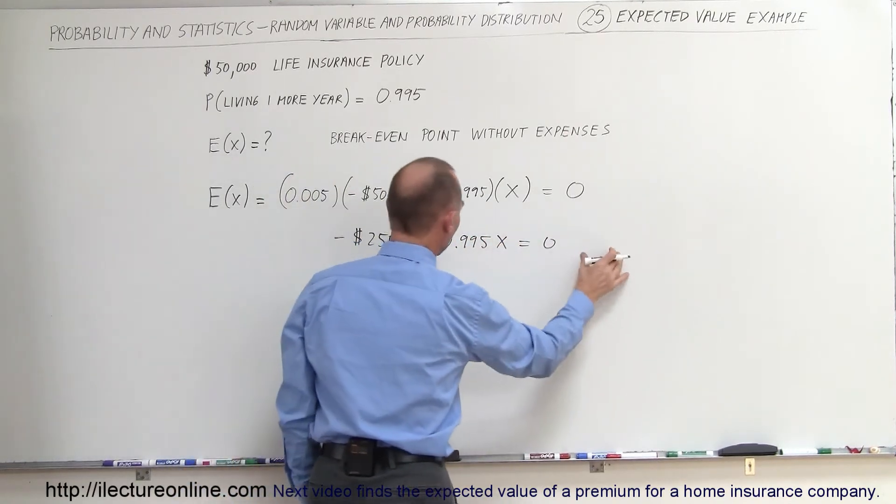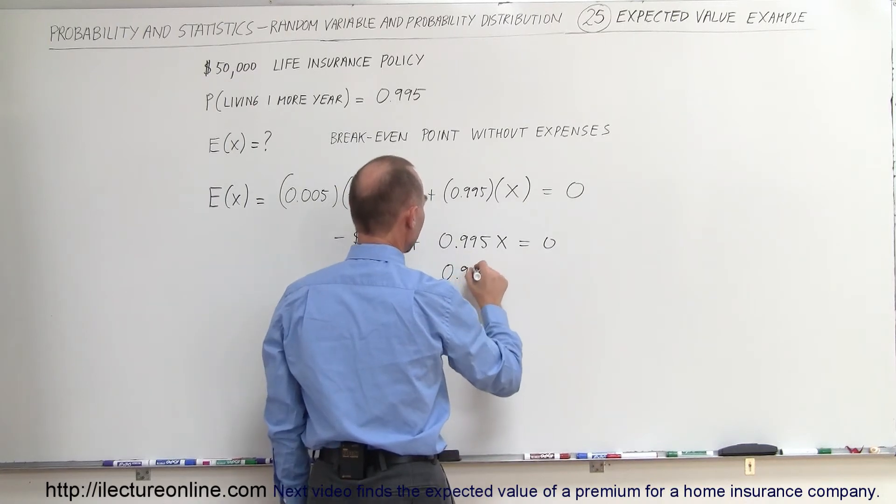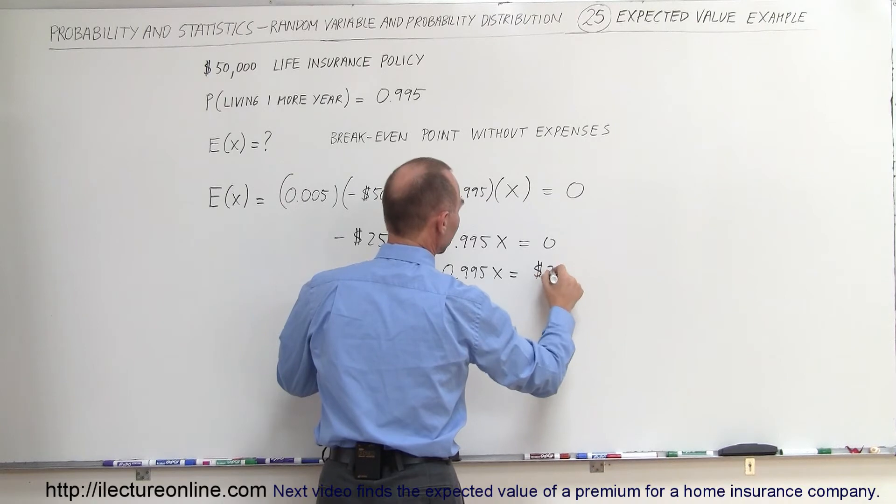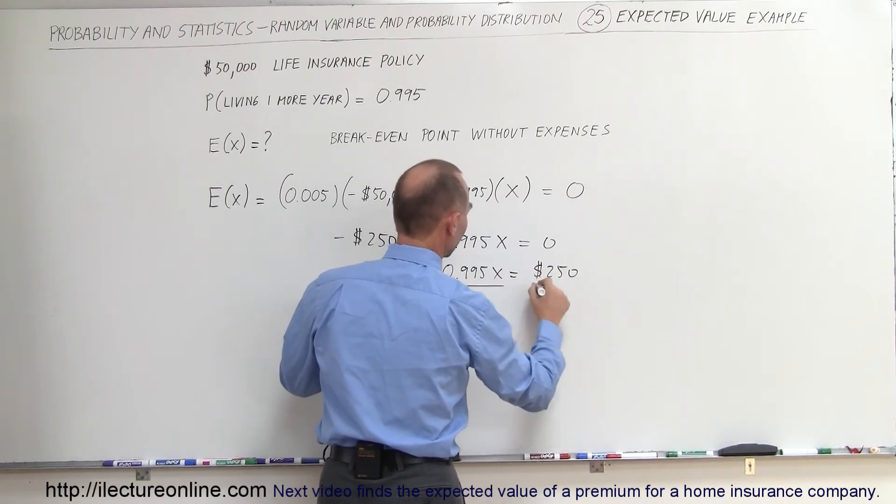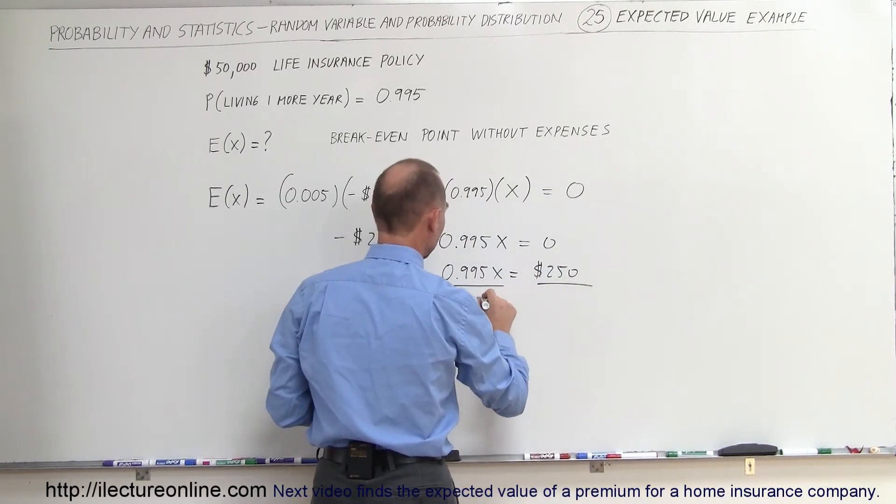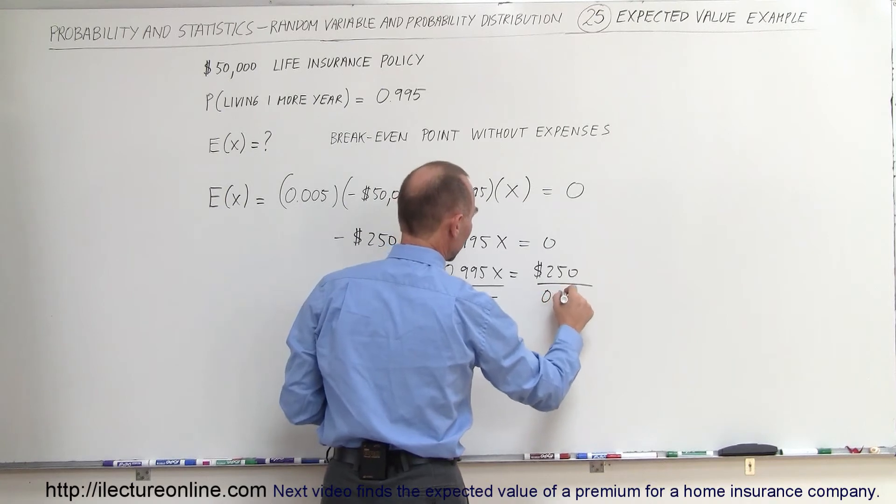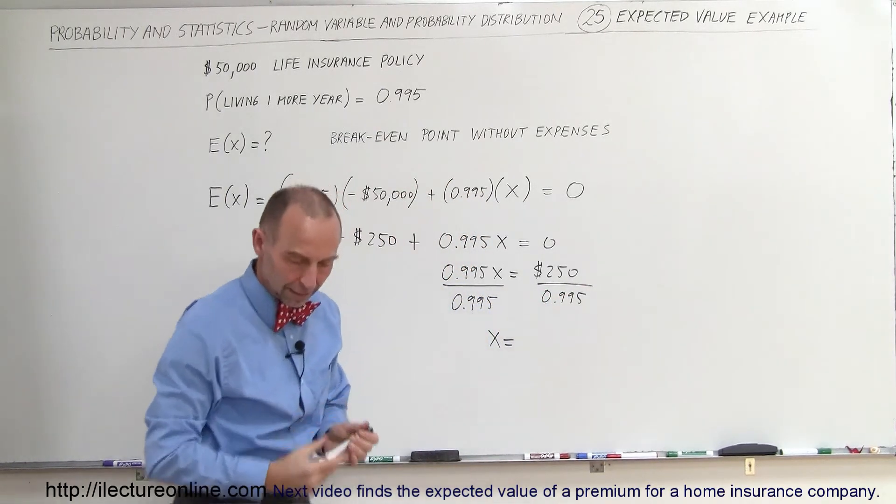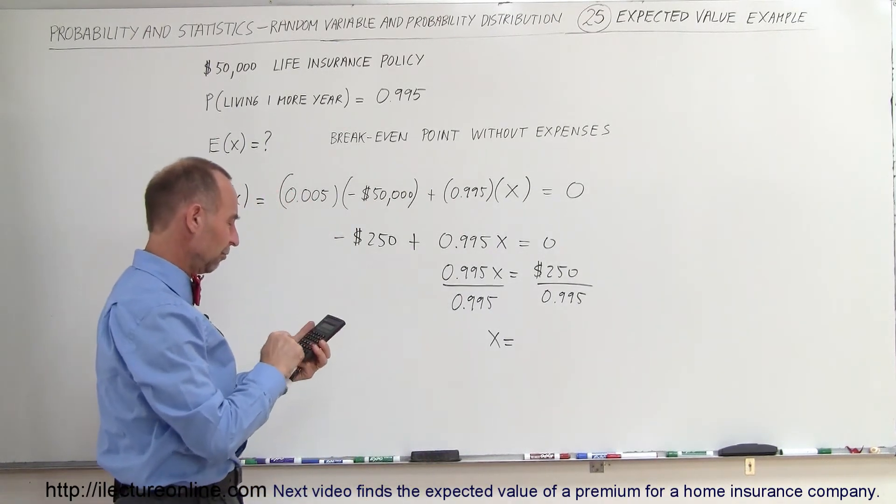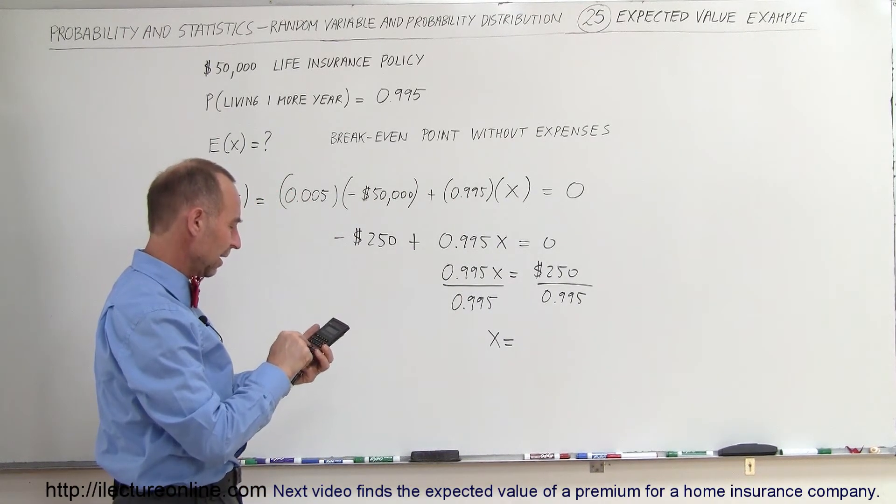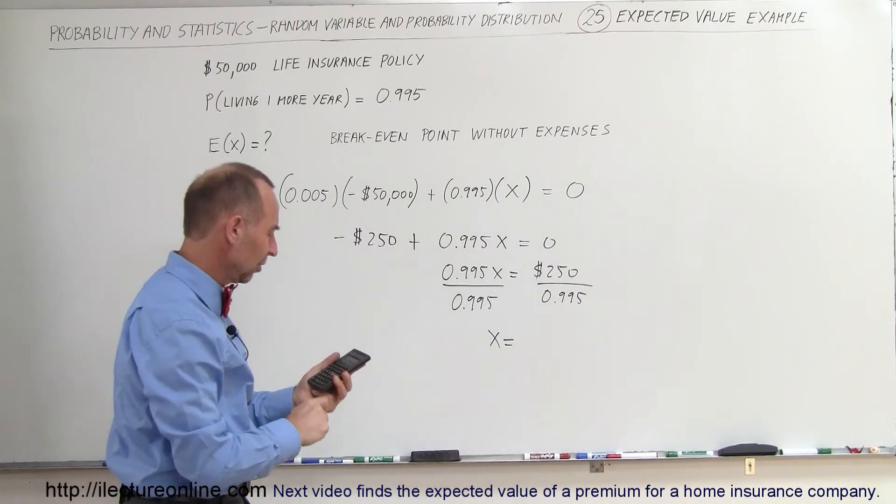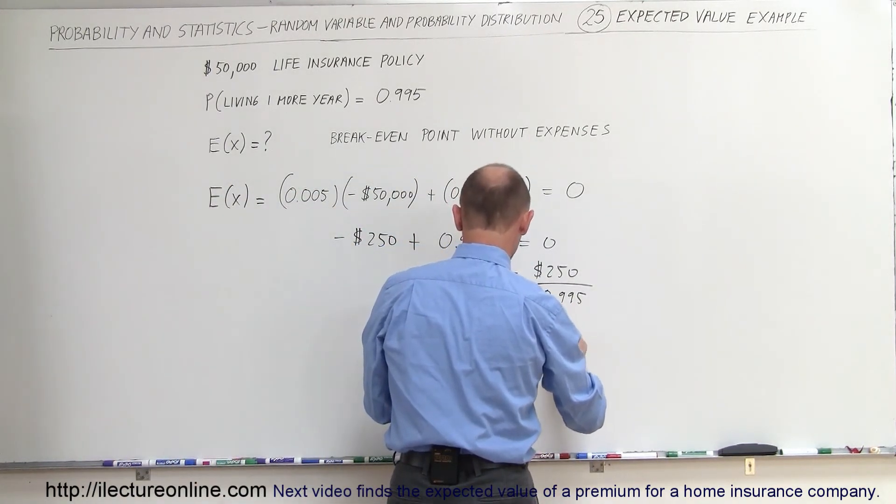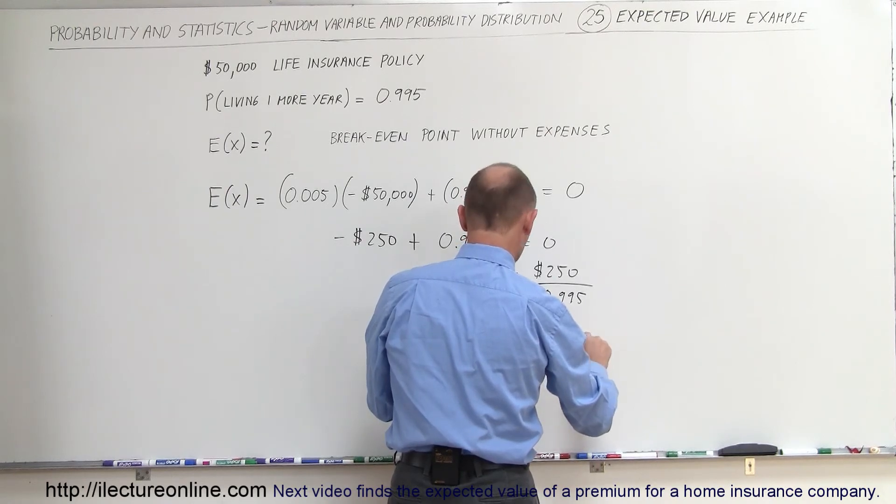So when we move this over to the other side, we get 0.995x is equal to a positive $250, and then if we divide both sides by 0.995, that means a minimum premium expected of $251.26.